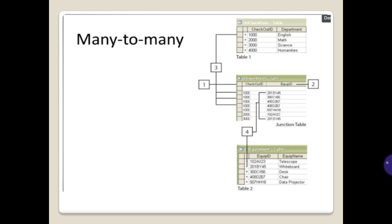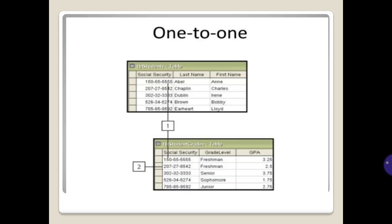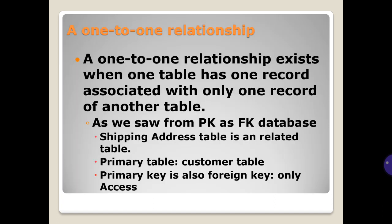And finally, one-to-one. A one-to-one relationship exists when one table has one record associated with only one record of another table. As we saw from PK as FK database, shipping address table is a related table. Primary table: customer table. And a primary key is also foreign key, only access.